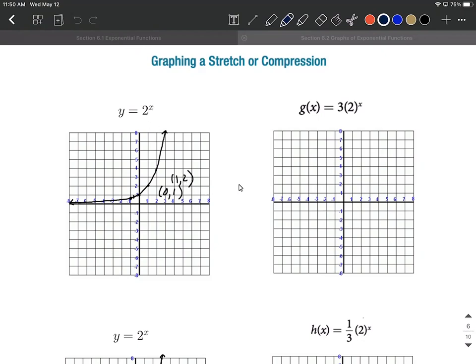These key points are important for getting additional points on this graph. Whenever we have a 3 multiplied in front, or any number bigger than 1, we call that a stretch. If there's a number between 0 and 1, we call that a compression. We'll see that in just a second.